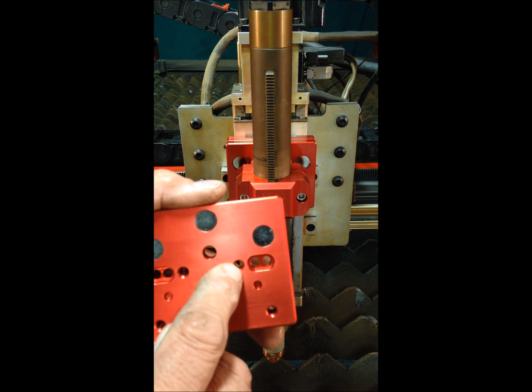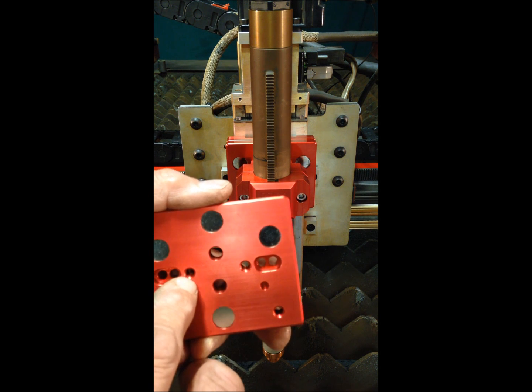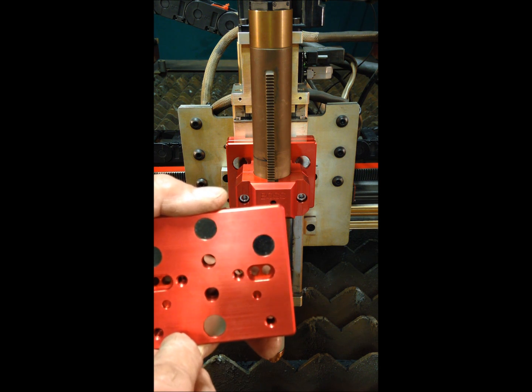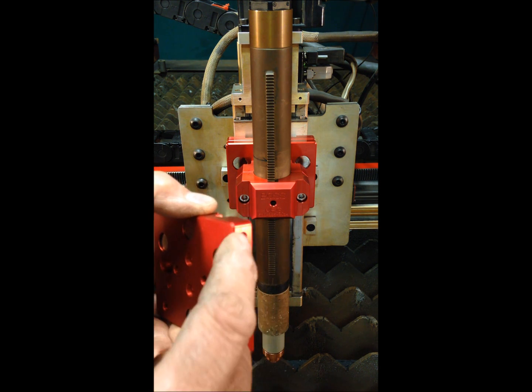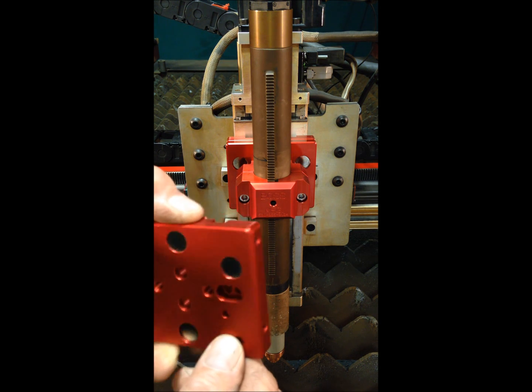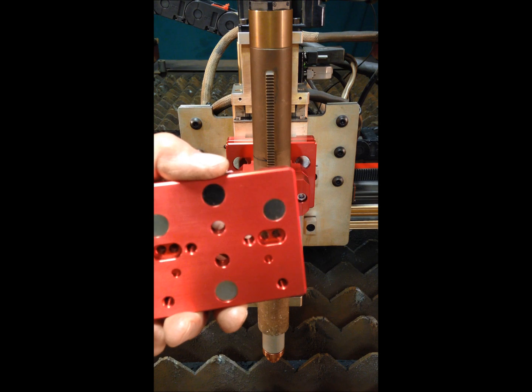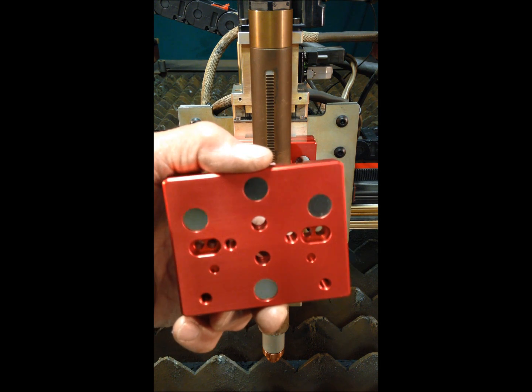There's two quarter-20 threaded through holes horizontally and vertically, there's two 3/8-16 threaded holes, as well as two sets of 10-32 threaded holes on both sides. This allows mounting to just about any torch riser out there.